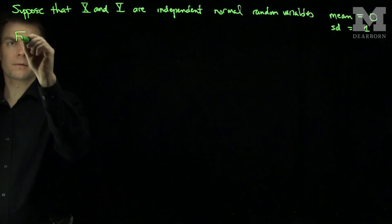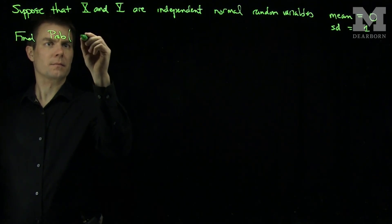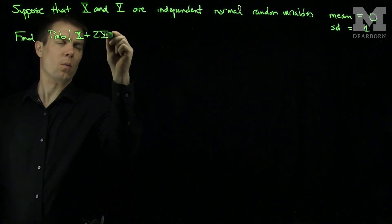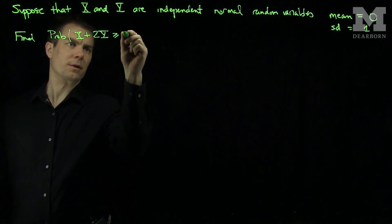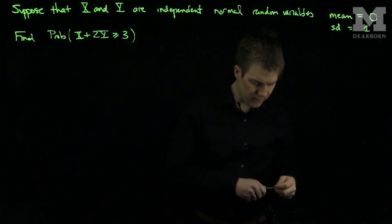Let's find the probability that X plus 2Y is bigger than or equal to 3. So for this problem, we need the following fact.